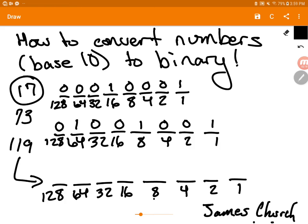119 is less than 128, so I know I'm not going to need that one. But I will need 64. 119 minus 64 is 55. So for 55, I know I'm going to need 32.